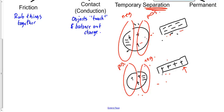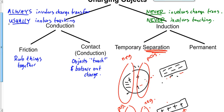Could electrons jump over and try to balance it out? That depends. If these are good enough conductors, the air between is a good enough conductor, they're close enough, and the charge buildup is big enough, then yes, electrons could arc over. But then it wouldn't be induction — it would be conduction, because that's a transfer of charge. Generally in these examples we assume that doesn't happen, but it can if all the conditions are met.